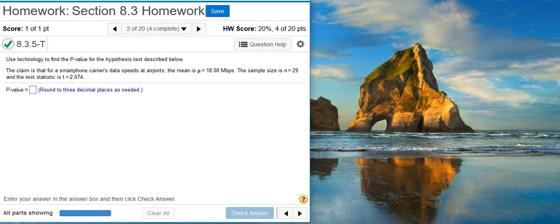Here's our problem statement. Use technology to find the p-value for the hypothesis test described below. The claim is that for a smartphone carrier's data speeds at airports, the mean is μ equals 18.00 megabytes per second. The sample size is n equals 29 and the test statistic is t equals 2.074.